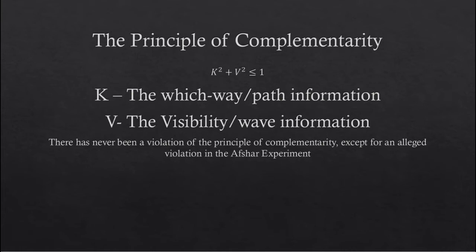Firstly, we have our variable K, the which-way information that can be used to quantify how much is known about the path that the particle took.